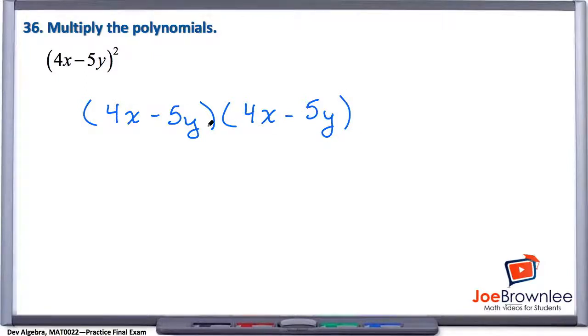And now this looks an awful lot like number 35, doesn't it? We have two polynomials. In this case, these are binomials. So we know when we multiply binomials together, all we have to do is FOIL. So let's go ahead and do that.